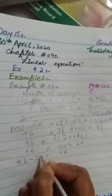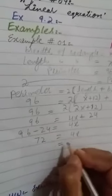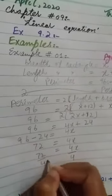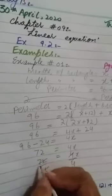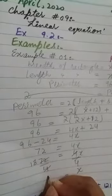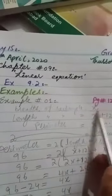So we have 4x plus 24 equals 96. We bring 24 to the other side: 4x equals 96 minus 24, which equals 72. Now divide both sides by 4, so x equals 18.